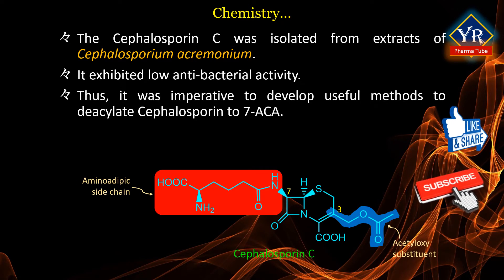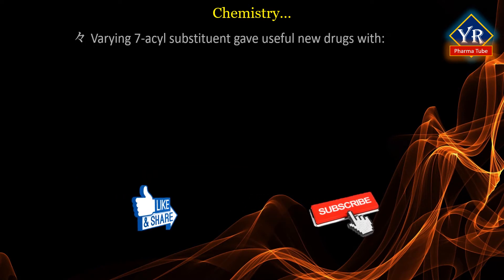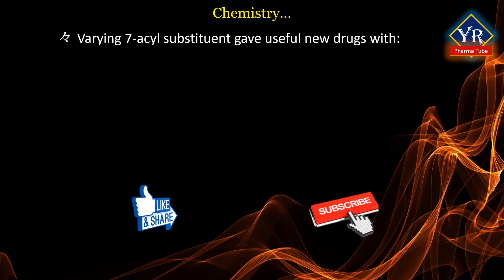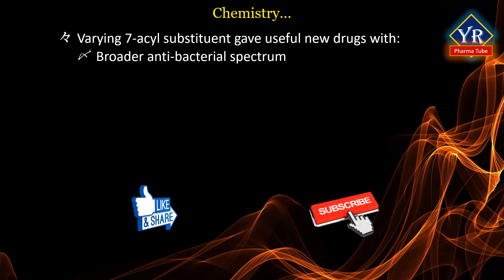Thus, it was imperative to develop useful methods to deacylate this cephalosporin to 7-aminocephalosporonic acid, abbreviated 7-ACA. There are at least two methods available to produce 7-ACA in commercial quantities. It became apparent that varying the 7-acyl substituent gave useful new drugs with broader antibacterial spectra than the earlier penicillins.